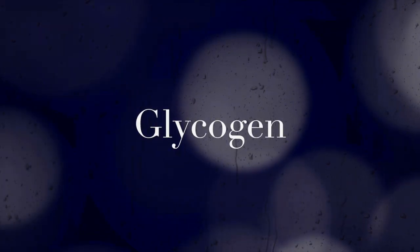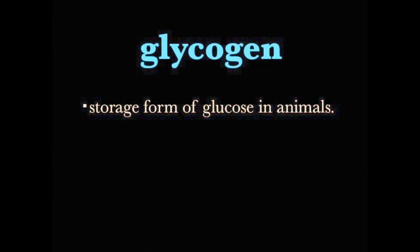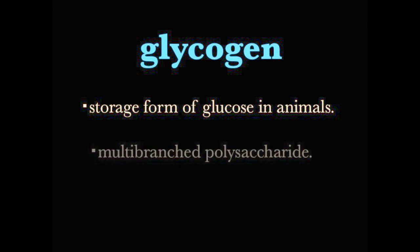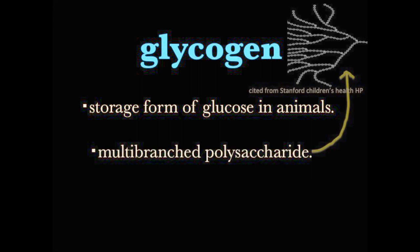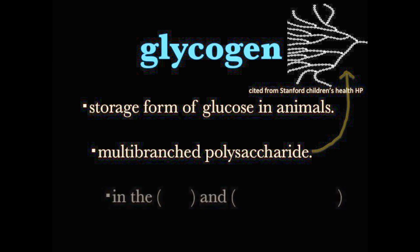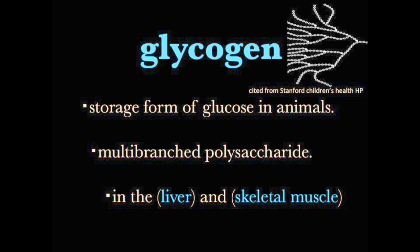What is glycogen? Glycogen is a storage form of glucose in animals. It's a multi-branched polysaccharide. Glycogen is made and stored in the cells of the liver and the skeletal muscles.